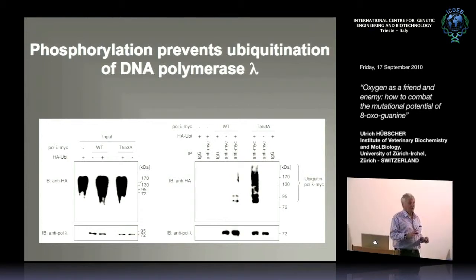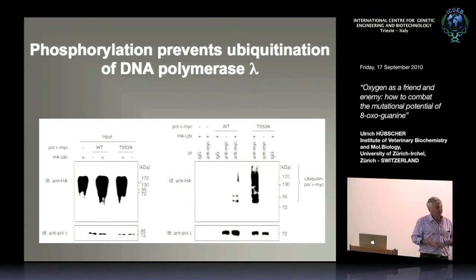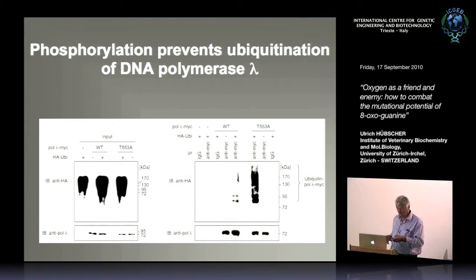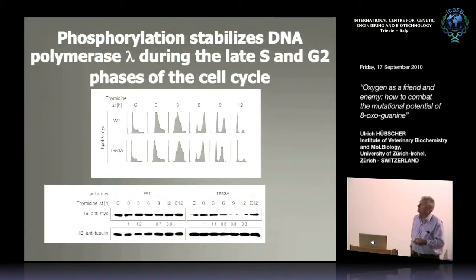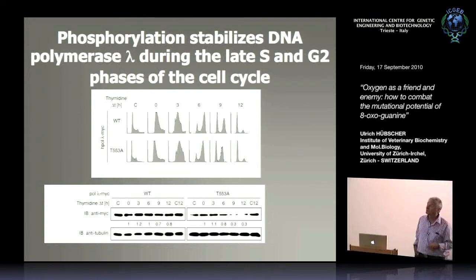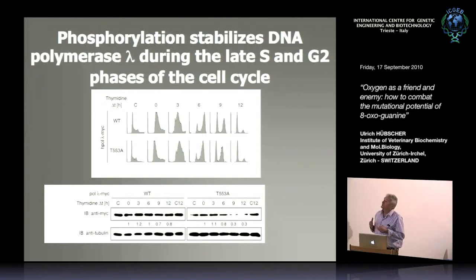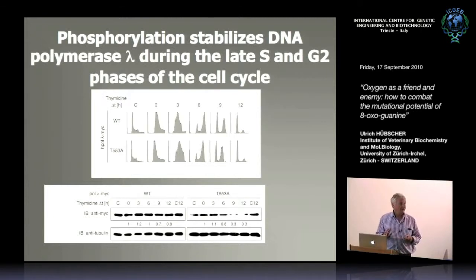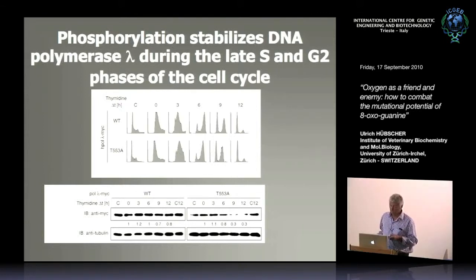Phosphorylation stabilizes pol lambda during late S and G2 phases of the cell cycle — precisely when the cell should have the closest look at genome integrity. This repair pathway, through the pol lambda–MutYH mechanism, has time to act because the enzyme is stabilized. Notably, threonine 553 is highly conserved in evolution from zebrafish to humans.